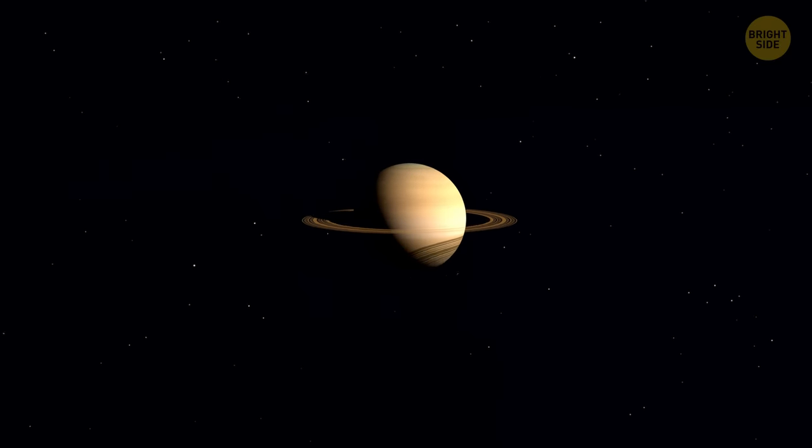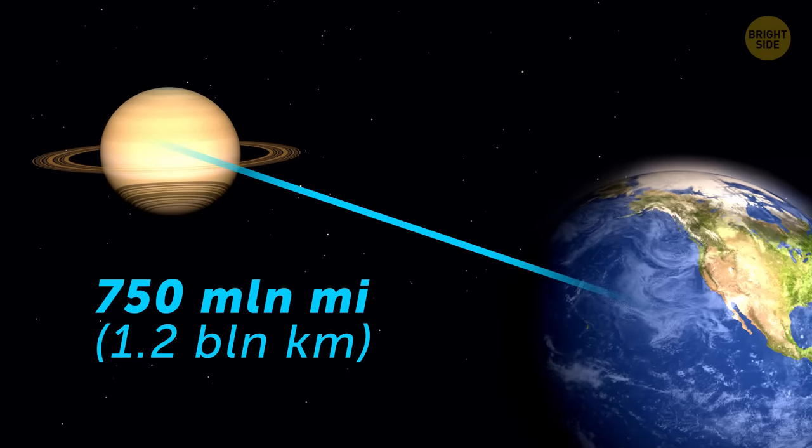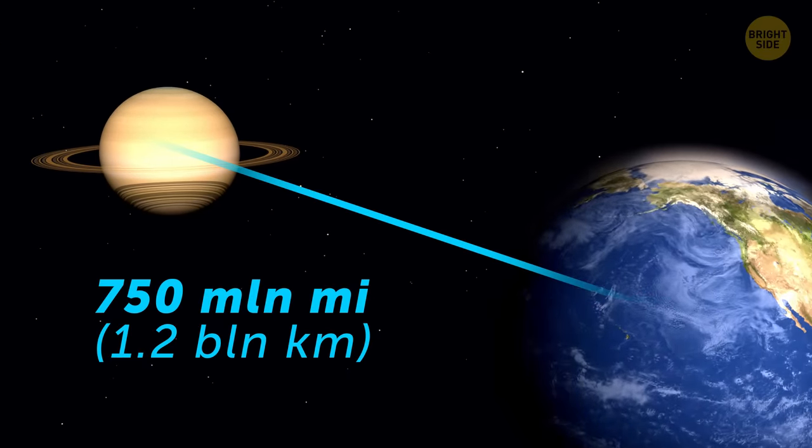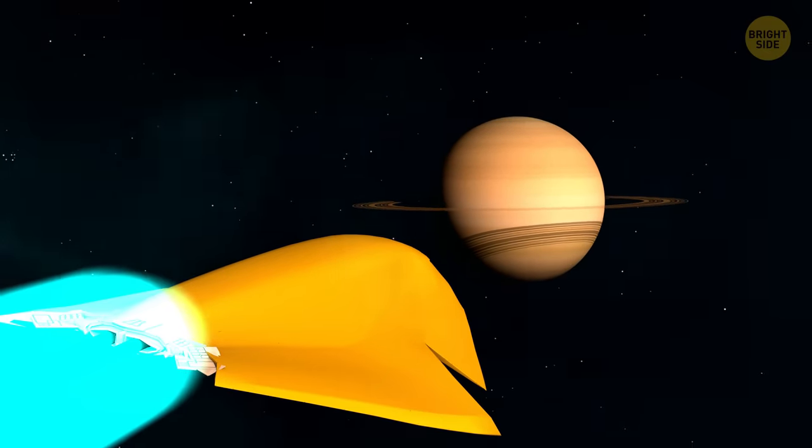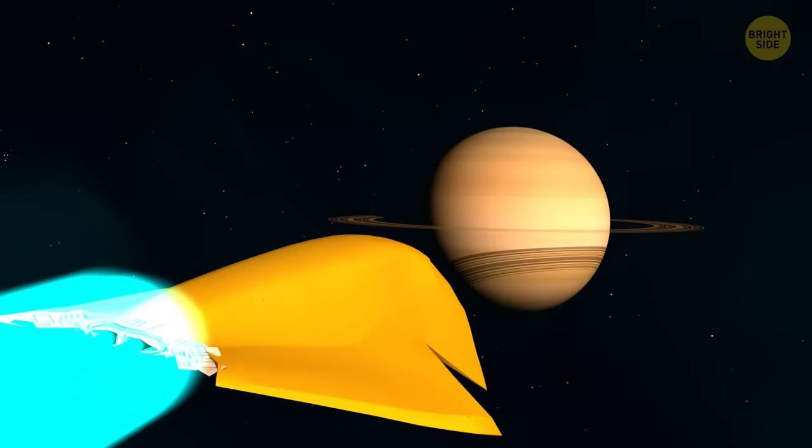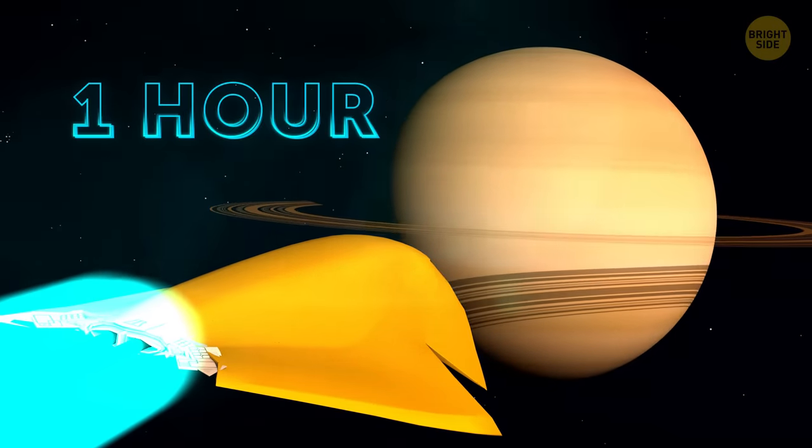But Jupiter is by no means the furthest you can go. Saturn is about 750 million miles away from Earth at its closest. That's 3,000 distances from our planet to the Moon. And still, if you traveled at the speed of light, you wouldn't even have enough time to watch your favorite movie. The entire journey would take a bit more than an hour.